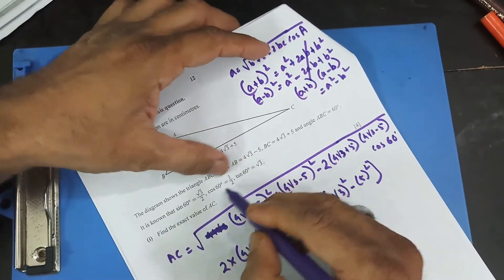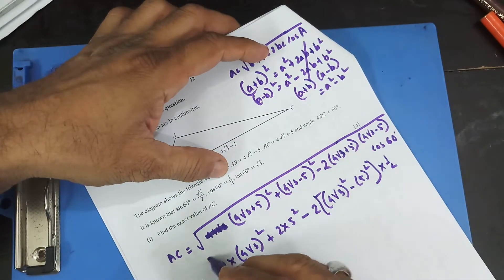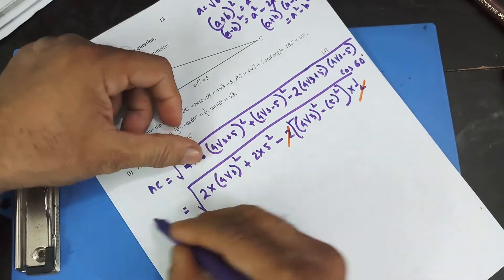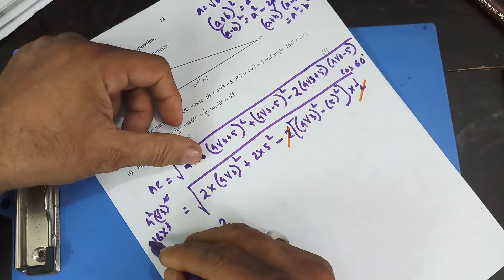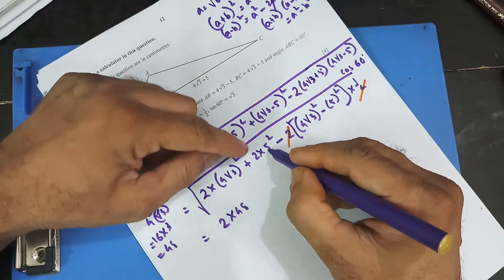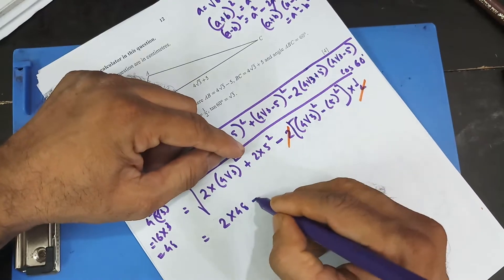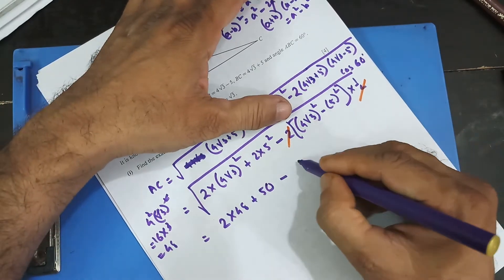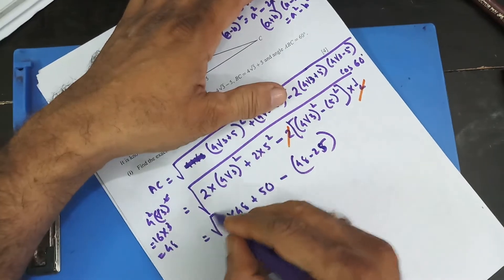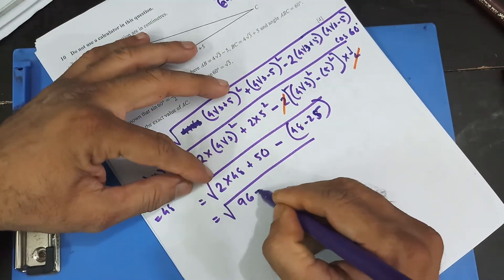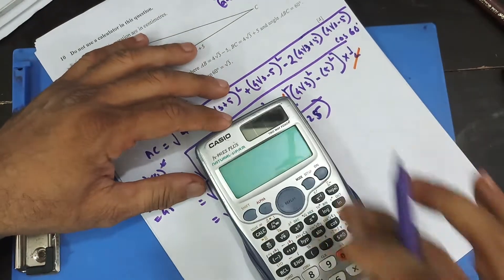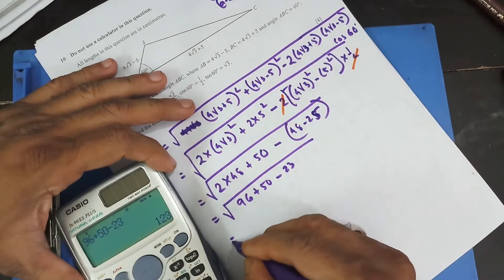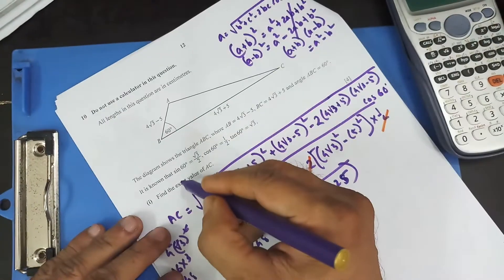And cos 60 is given as 1/2. I can cancel this 2 and that 2 out. Over here (4√3)² = 16 × 3 = 48, times 2 is 96. And 5² = 25, times 2 is 50. Minus: 48 − 25 = 23. So that's 96 + 50 − 23. I get square root of 123. That's the exact value of AC in centimeters.